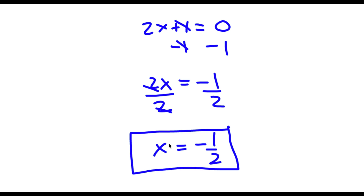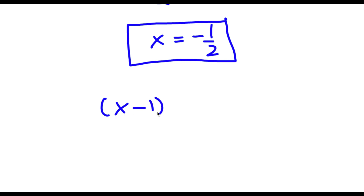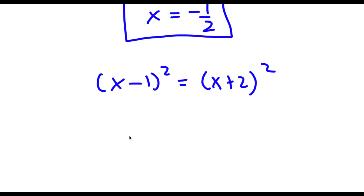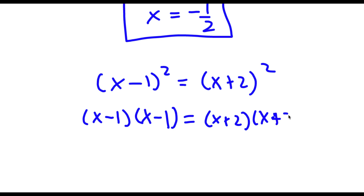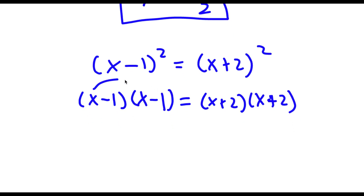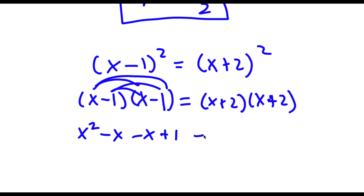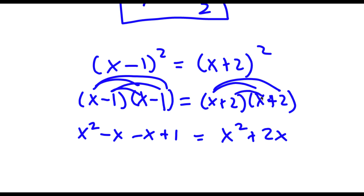Now here is another method of actually doing this problem. So I have x minus 1 squared is equal to x plus 2 squared. Now x minus 1 squared is the same thing as x minus 1 times x minus 1, and x plus 2 squared is the same thing as x plus 2 times x plus 2. Distributing: x times 2 is 2x, 2 times x is 2x, and 2 times 2 is 4.